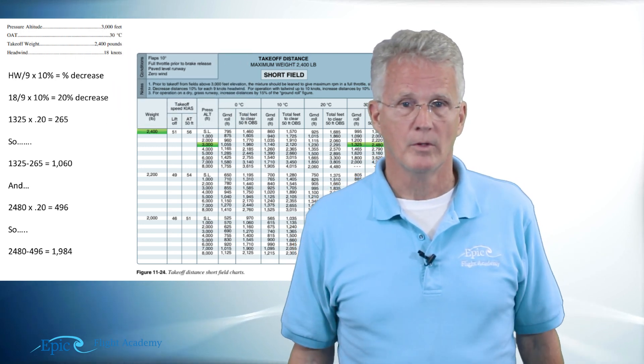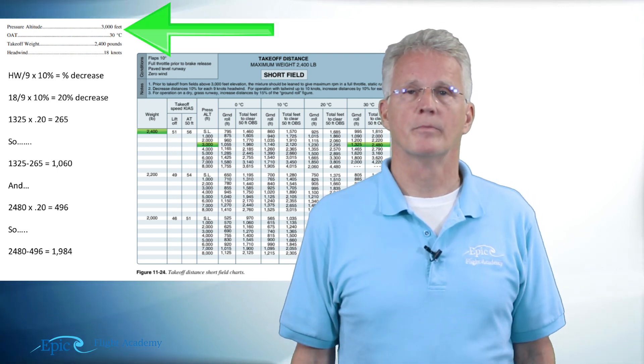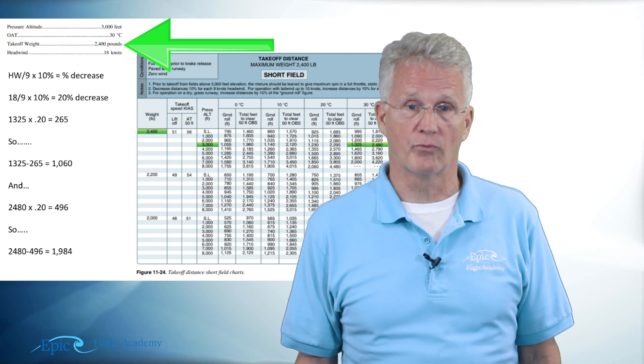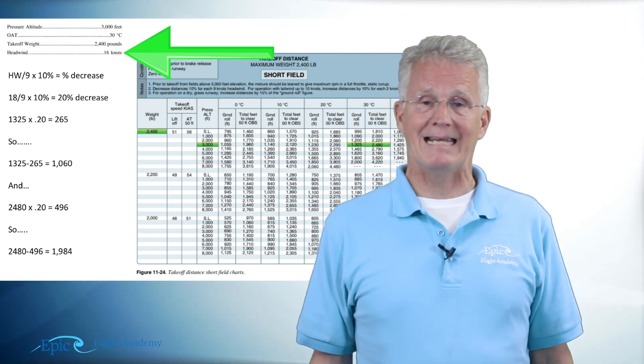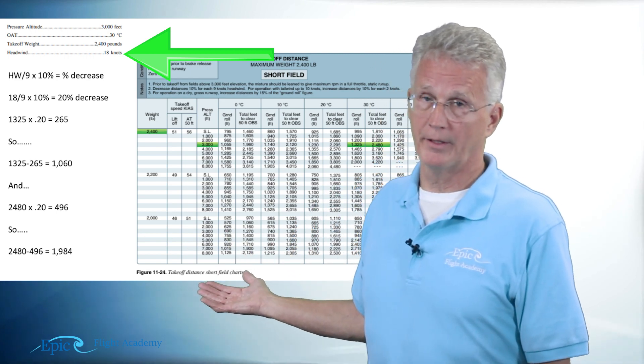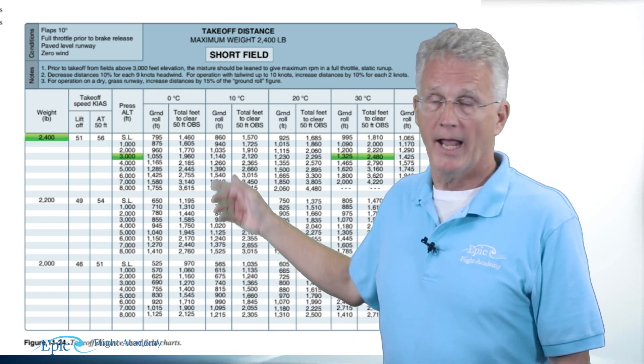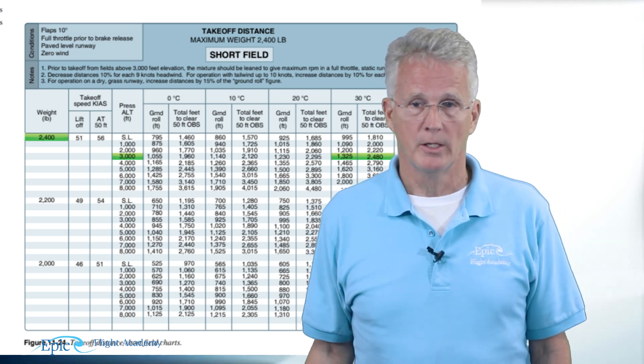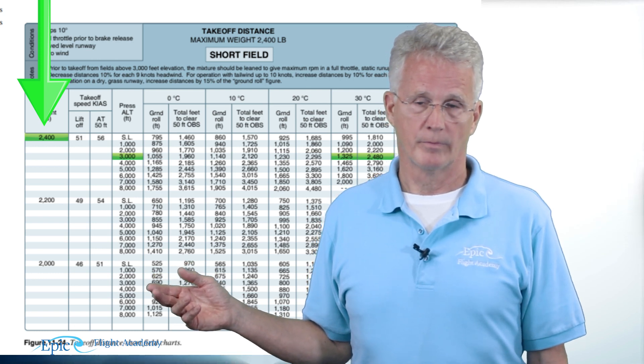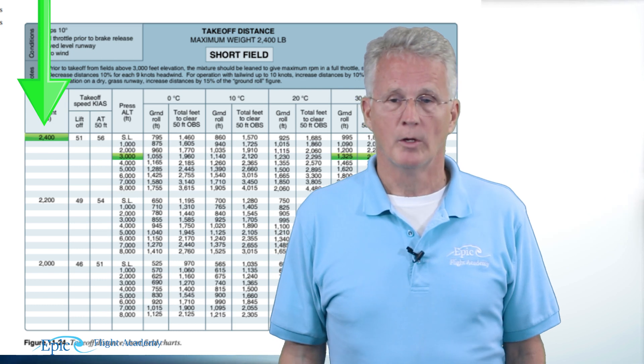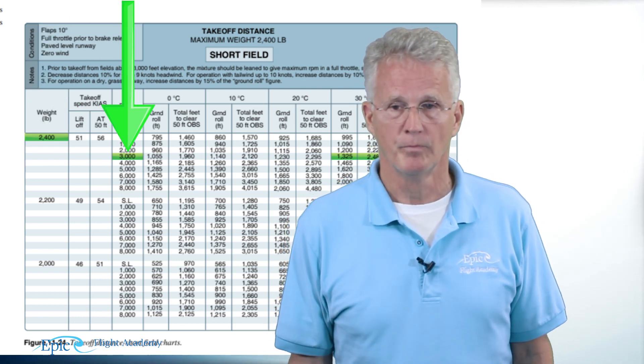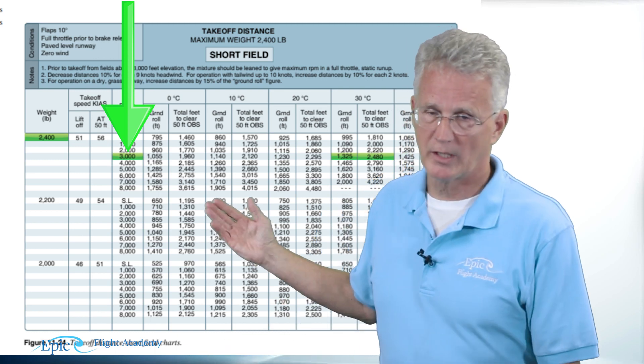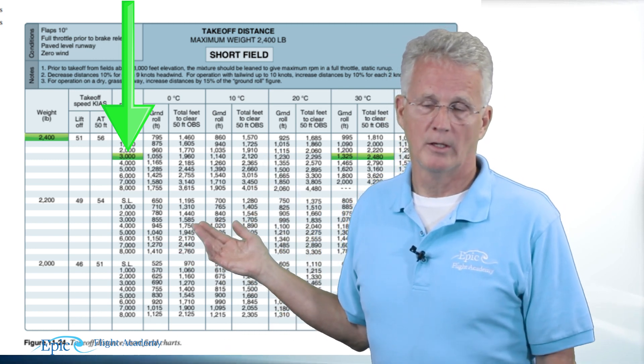Now that we've cleared that up let's take a look at our example. In this example we have a pressure altitude of 3,000 feet, 30 degrees Celsius and an aircraft takeoff weight of 2,400 pounds and a headwind of 18 knots. So we start into our chart method on the left side of the chart and notice it says weight. Our weight is 2,400 so that's where we'll enter. We cross over to the right to pressure altitude. You can see highlighted in green here is our pressure altitude of 3,000 feet.